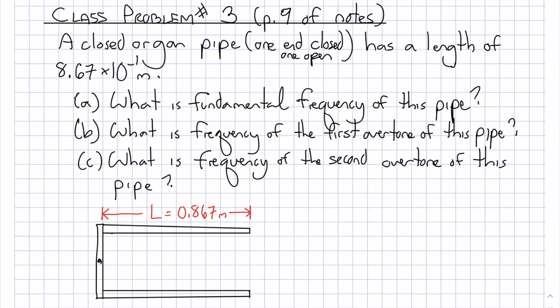The question says a closed organ pipe has a length of 8.67 times 10 to the negative one meters. What is the fundamental frequency of this pipe? What is the frequency of the first overtone of this pipe? And what is the frequency of the second overtone of this pipe?